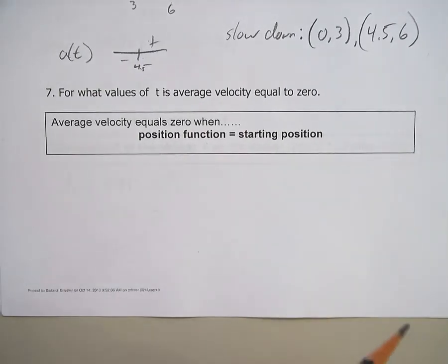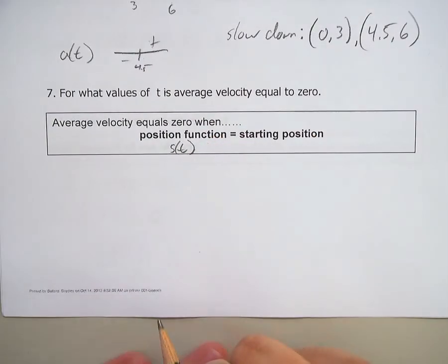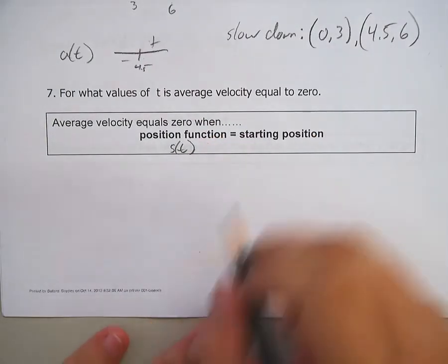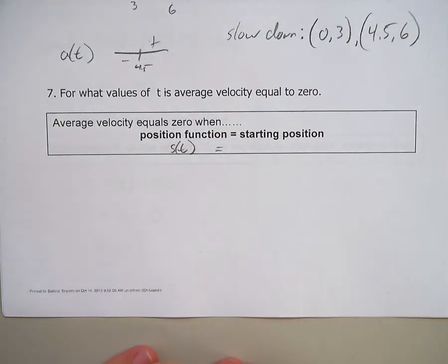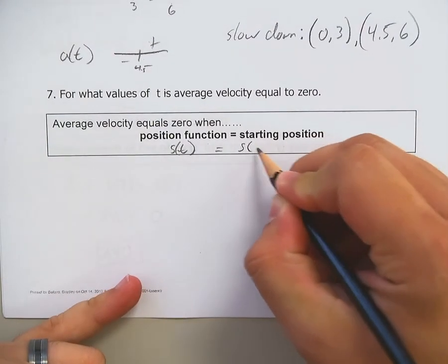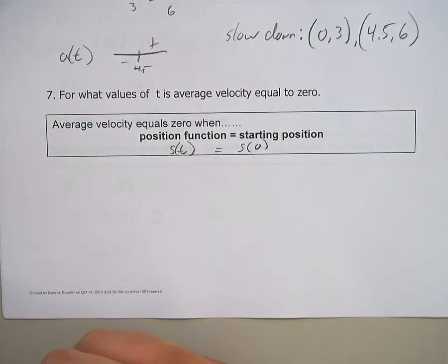Average velocity equals zero when the position function equals the starting position. Say what? When the position function, s of t, equals the starting position. Well, how do you label your starting position? You started at time zero. So how about your position function when time is zero? So you need to figure out where does s of t become s of zero?